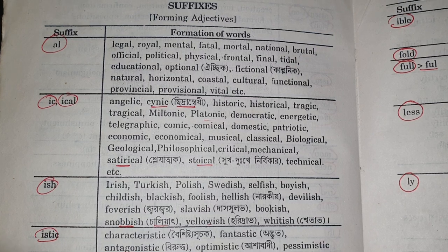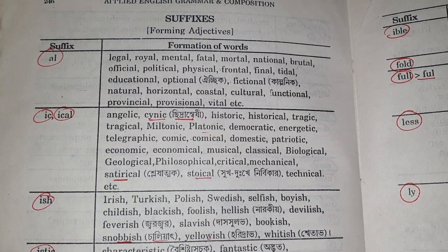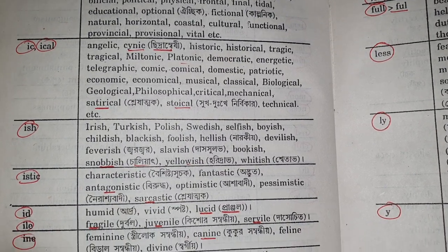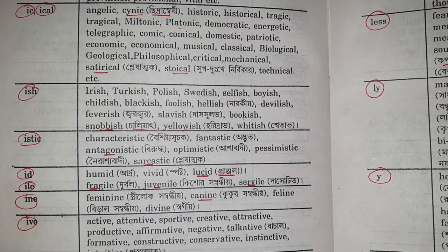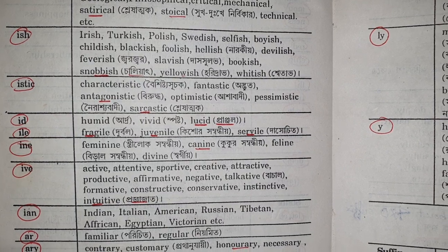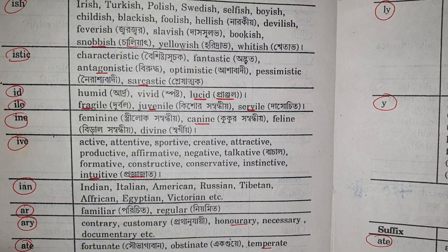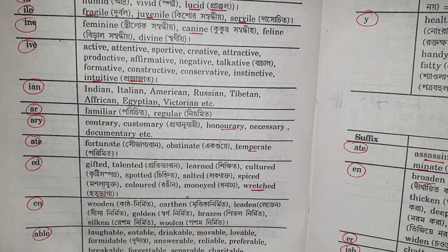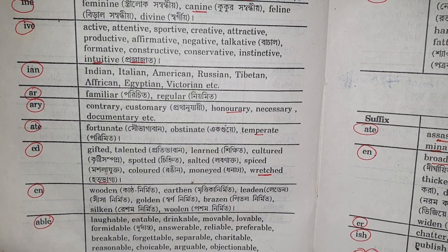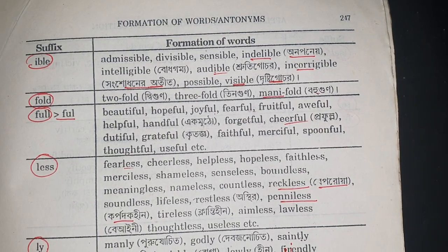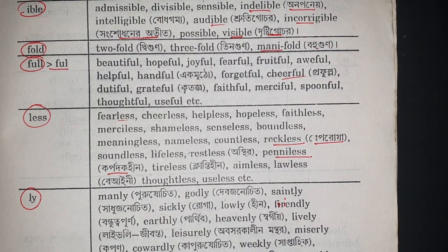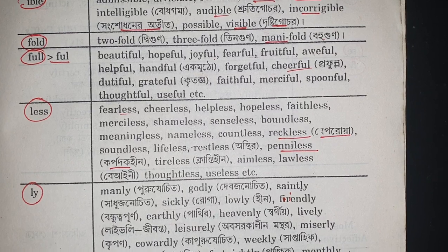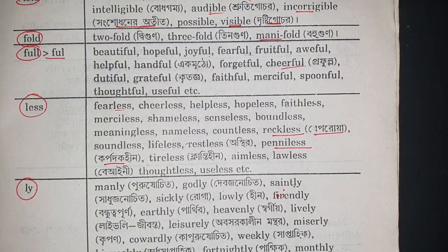Forming adjectives: suffix -al: legal, royal, mental. -ic/-ical: angelic, historic, historical. -ish: Irish, Turkish. -istic: characteristic, fantastic. -id: humid. -ile: fragile. -ine: feminine. -ive: active. -ian: Indian. -ar: familiar. -ary: contrary. -ate: fortunate. -ed: gifted. -en: wooden. -able: laughable, eatable. -ible: admissible, divisible. -fold: twofold, threefold. -full: when adding -ful, spelling changes — only one L, e.g., beautiful, hopeful.